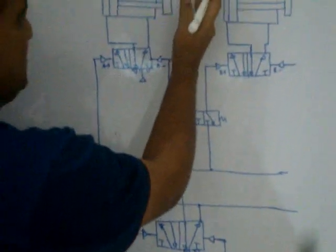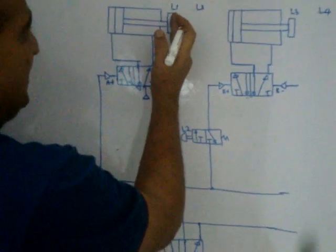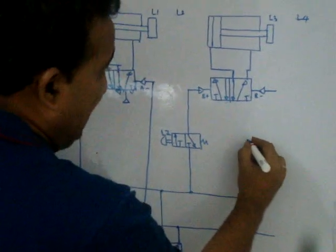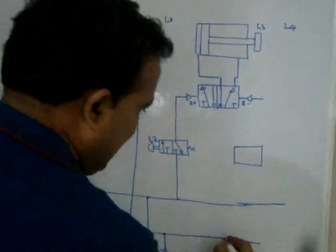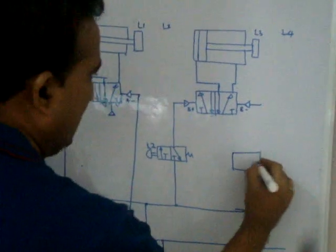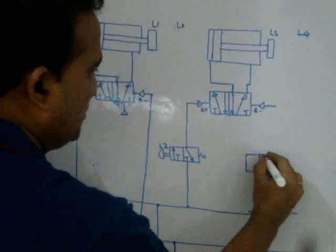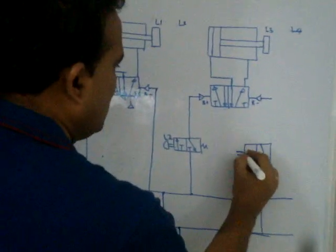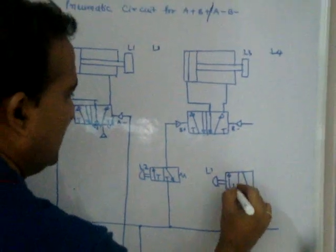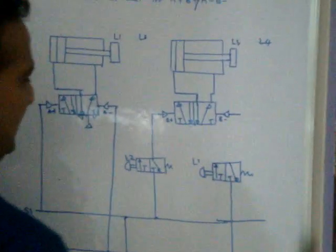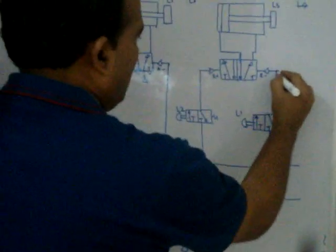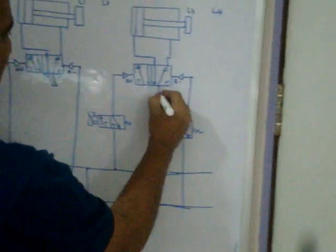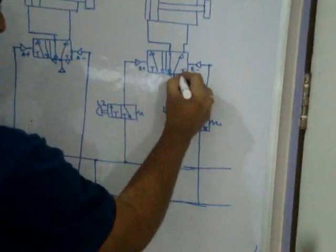A minus: the piston goes from its current position to L1. When it reaches L1, the final action is B minus. So the condition on this line is L1 — a spring-return valve triggered by L1.